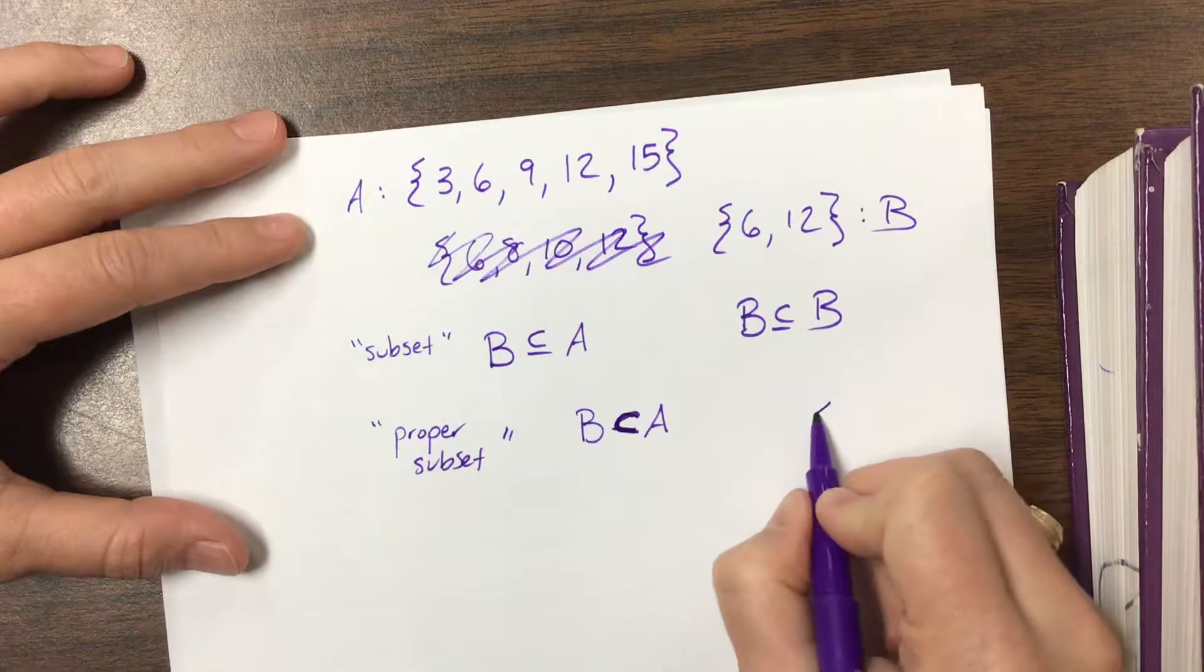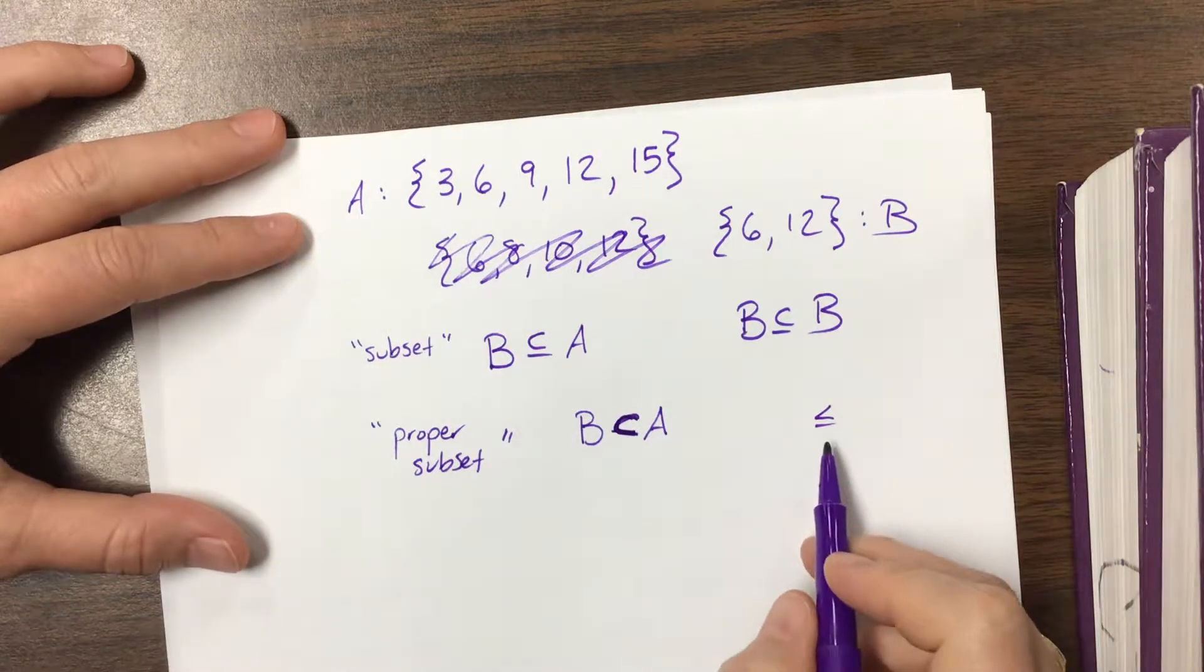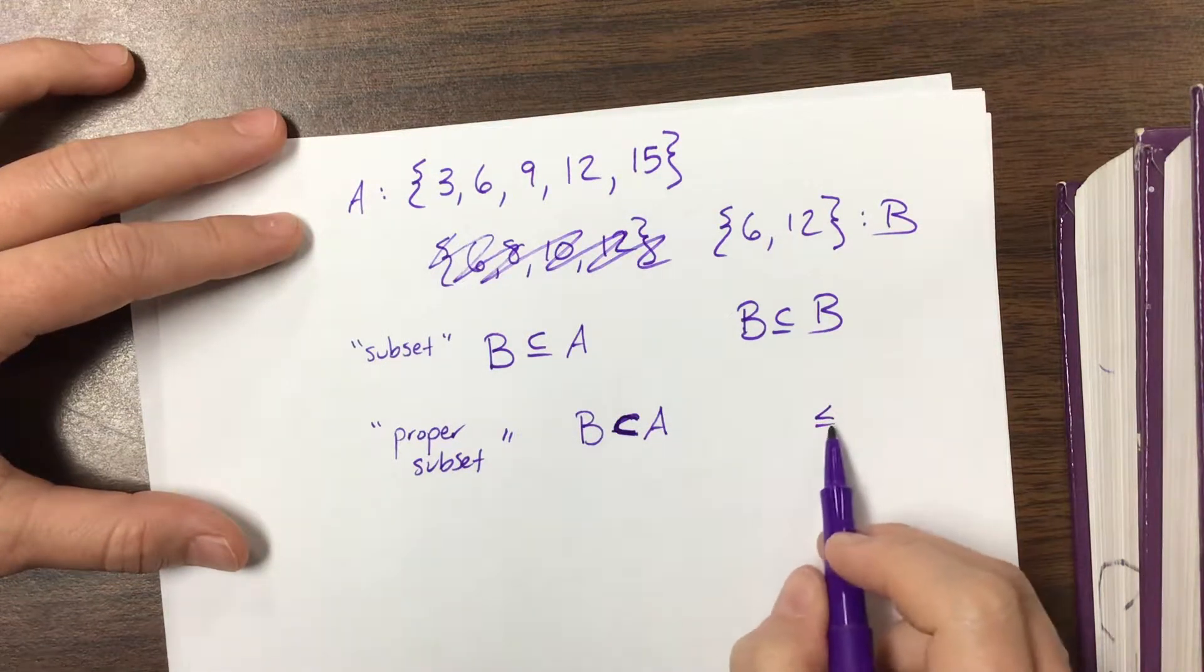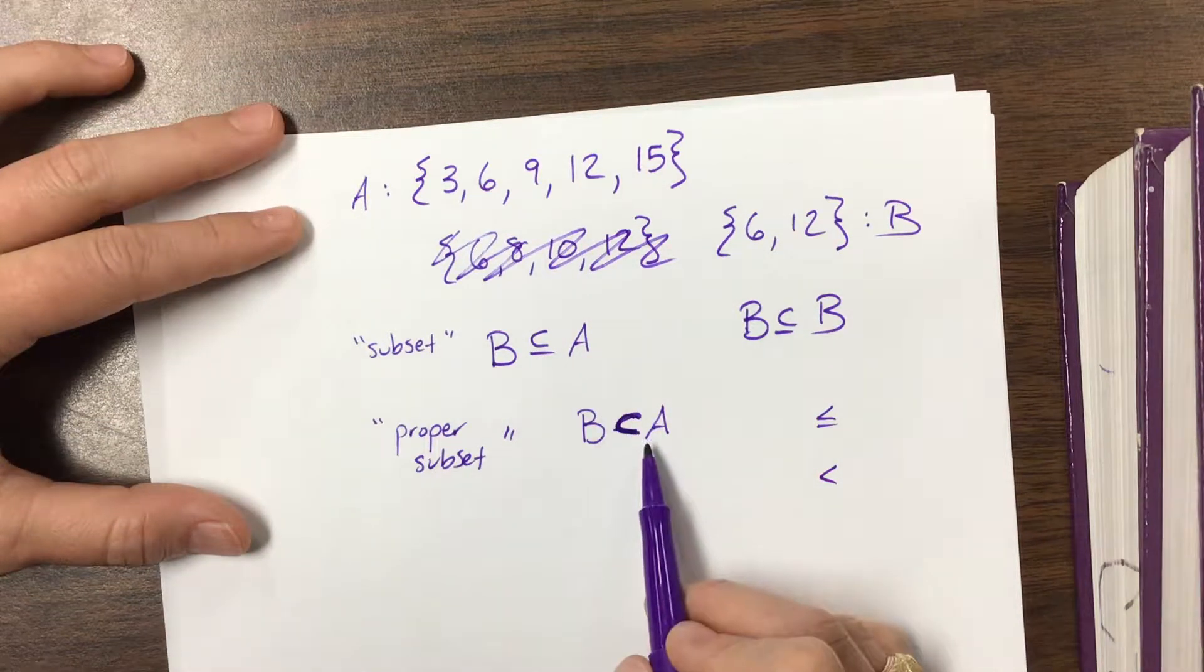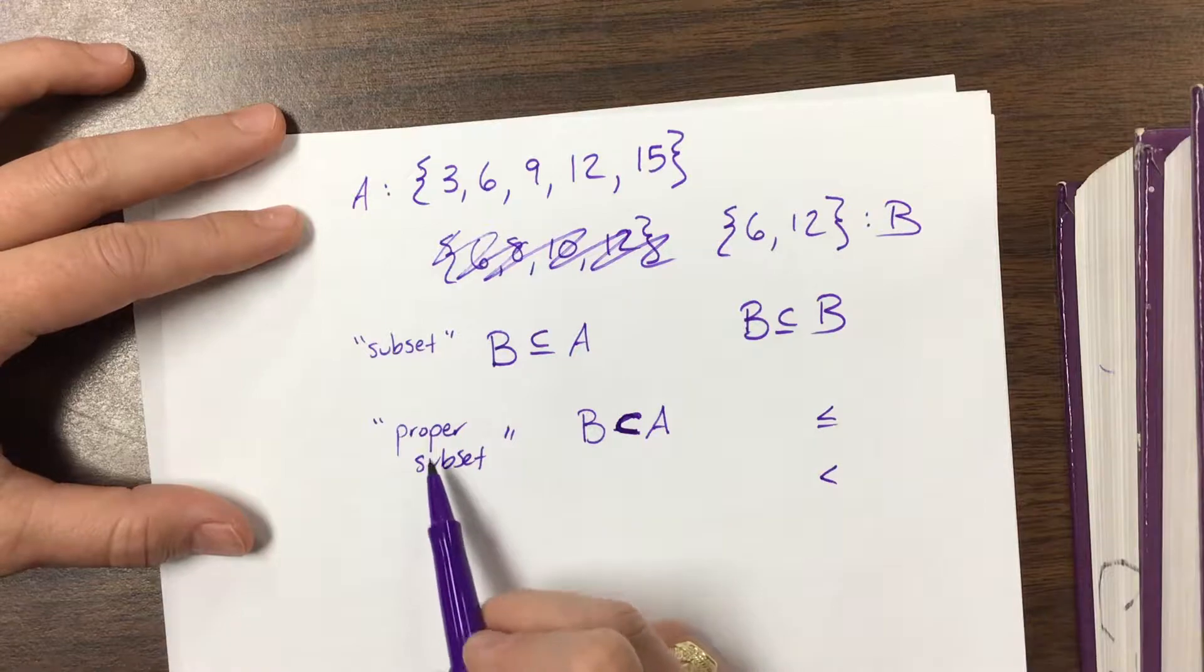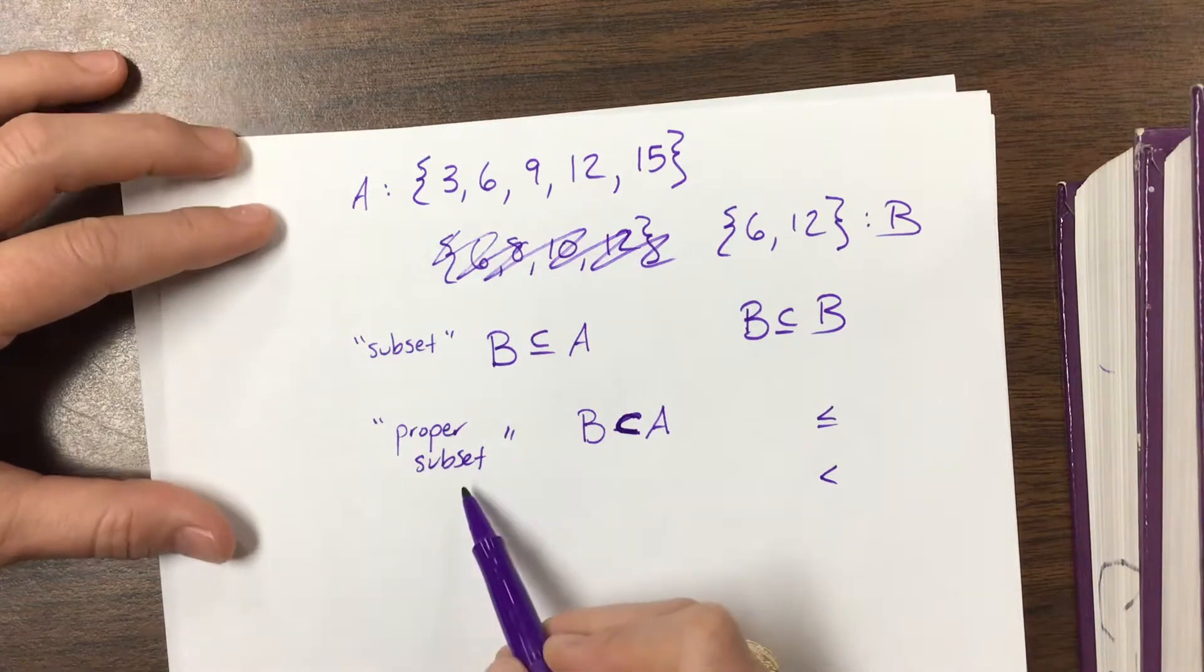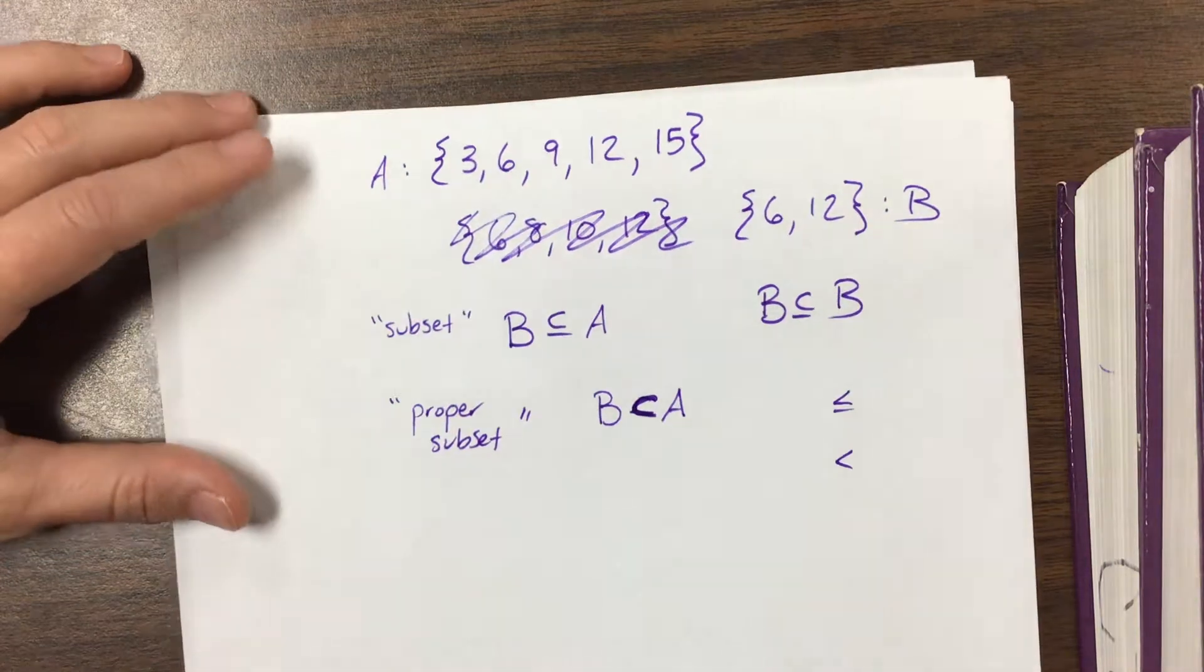This one is also a proper subset. So this is the notation for subset, and this is the notation for proper subset. B is a proper subset of A. It's kind of this little subset thing. It's not exactly a C, it's more like a sideways U.